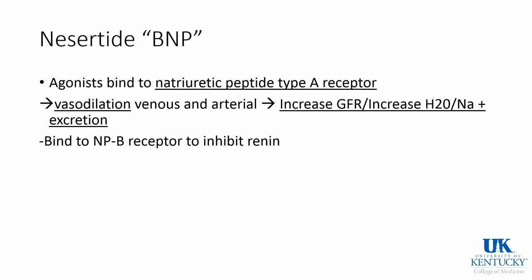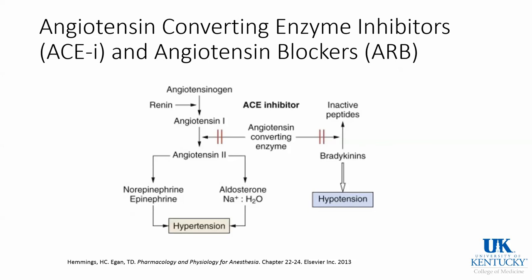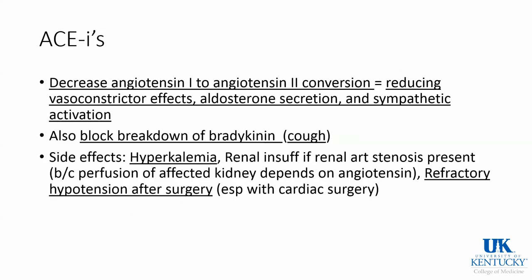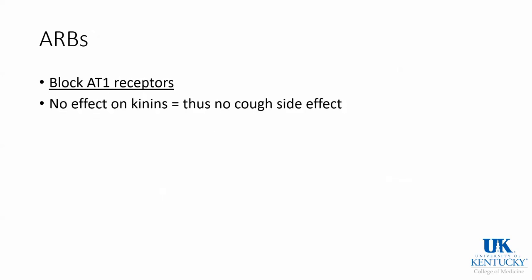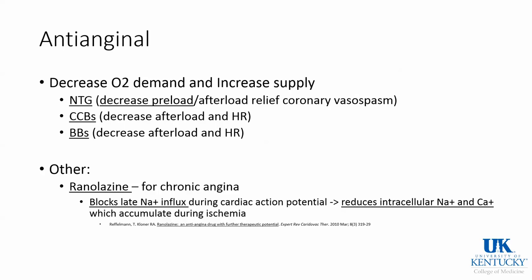BNP has some natriuretic effects, causing vasodilation. ACE inhibitors and angiotensin blockers work through the renin-angiotensin pathway. ACE inhibitors decrease the conversion, reducing vasoconstrictor effects, and they block the breakdown of bradykinin — that's where you get the cough, which you don't get from ARBs. Side effects include hyperkalemia and refractory hypotension after surgery, especially cardiac surgery. ARBs block the angiotensin-1 receptors with no cough side effect. Anti-anginal drugs decrease oxygen demand and increase supply, including nitrates, calcium channel blockers, beta blockers, and ranolazine, which is used for chronic angina by reducing intracellular sodium and calcium accumulation during ischemia.